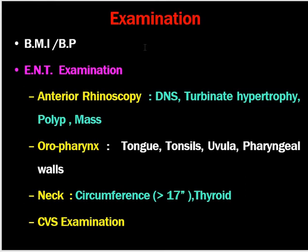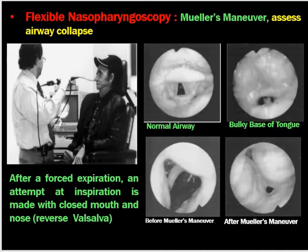Examination should include BMI and blood pressure. Nasoendoscopy is important to assess for DNS, turbinate hypertrophy, polyps, or mass. In the pharynx, assess tongue size, tonsil size, uvula, and pharyngeal walls. An elongated uvula and prominent posterior pharyngeal wall are common in patients with sleep apnea syndrome. Neck circumference of more than 17 inches, thyromegaly, and cardiovascular system examination are also important.